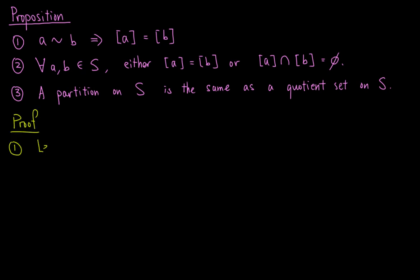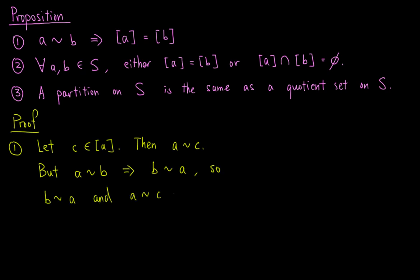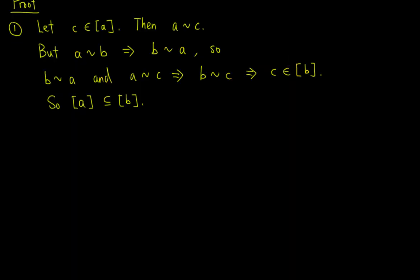For the first point, we use double inclusion to prove the two sets are equal. Let C be an element of the equivalence class of A. Then A is related to C. By assumption, A is related to B, which means B is related to A since R is symmetric. So B is related to A and A is related to C, which implies B is related to C since R is transitive. This means C is in the equivalence class of B, so the equivalence class of A is contained in the equivalence class of B.